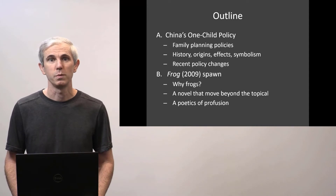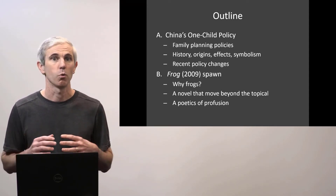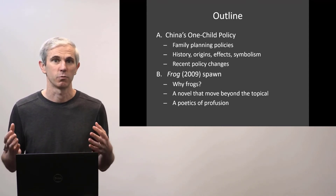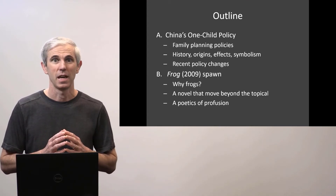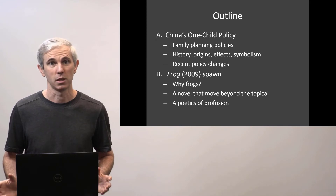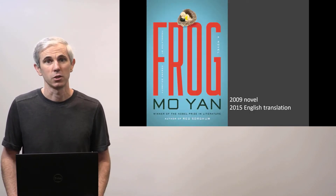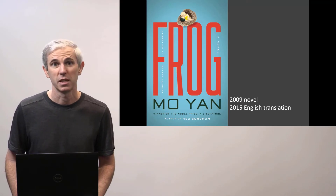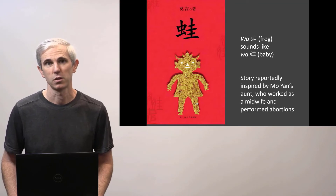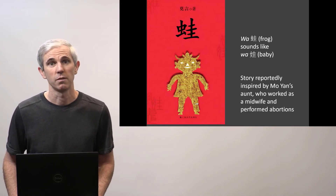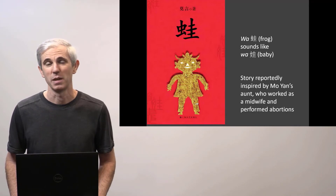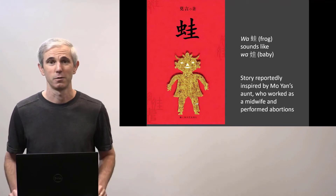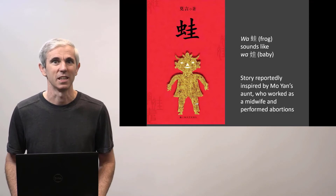In this video lecture, I want to argue that Moyen moves beyond just the topic of a particular event in history into a more imaginative space by creating what could be called a poetics of profusion — one that takes one simple motif and shows that it can be a symbol for many different things, including some things that are not just based on Chinese history. Frog was written in 2009, and the year that the English translation came out was the year that the one-child policy ended. Moyen is said to have been inspired to write this story because of a personal family connection. The character Gugu in this novel is supposedly based on Moyen's aunt, a family member who also worked as a midwife and performed abortions.